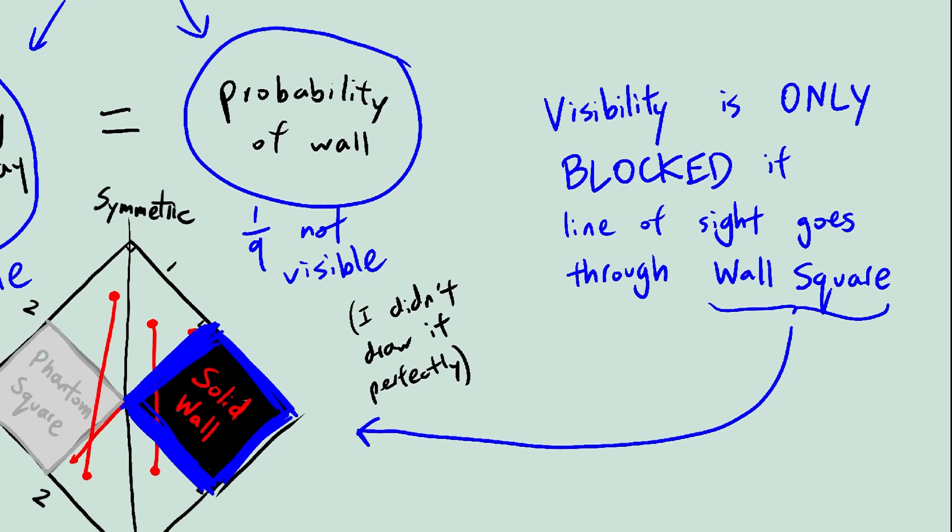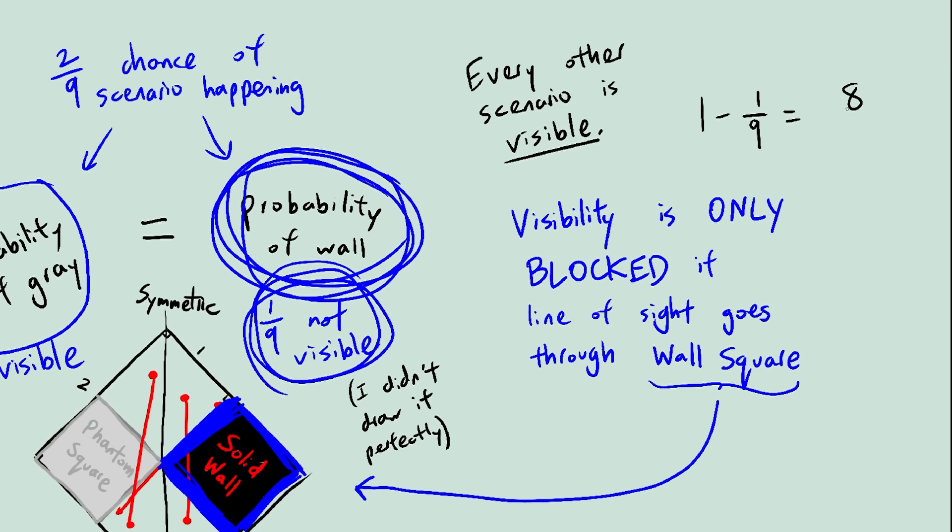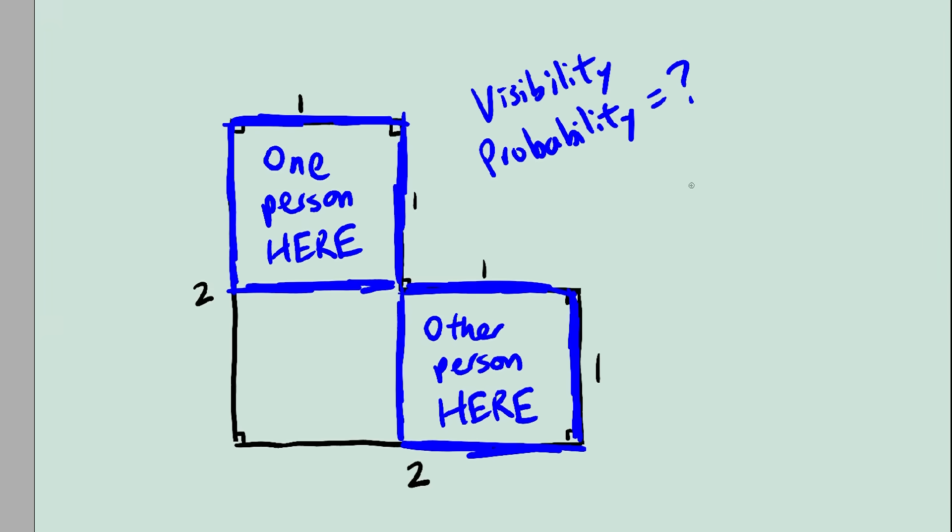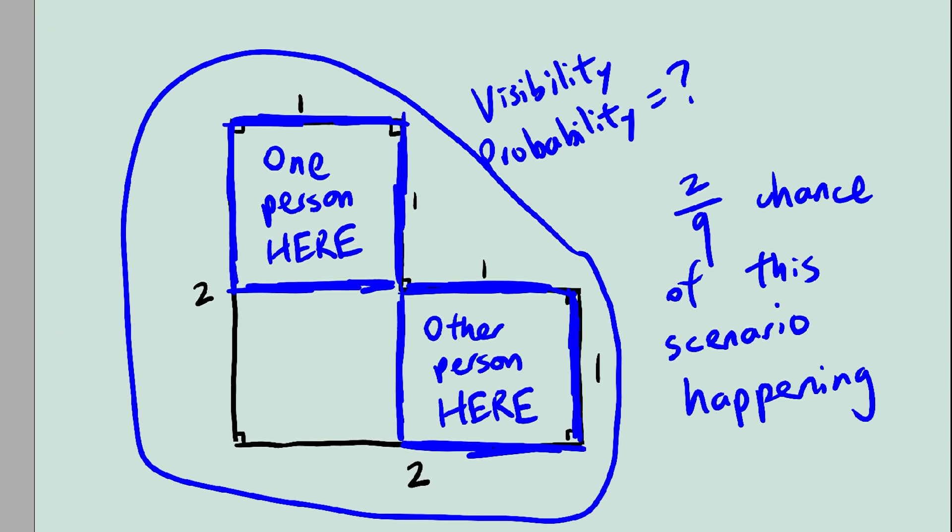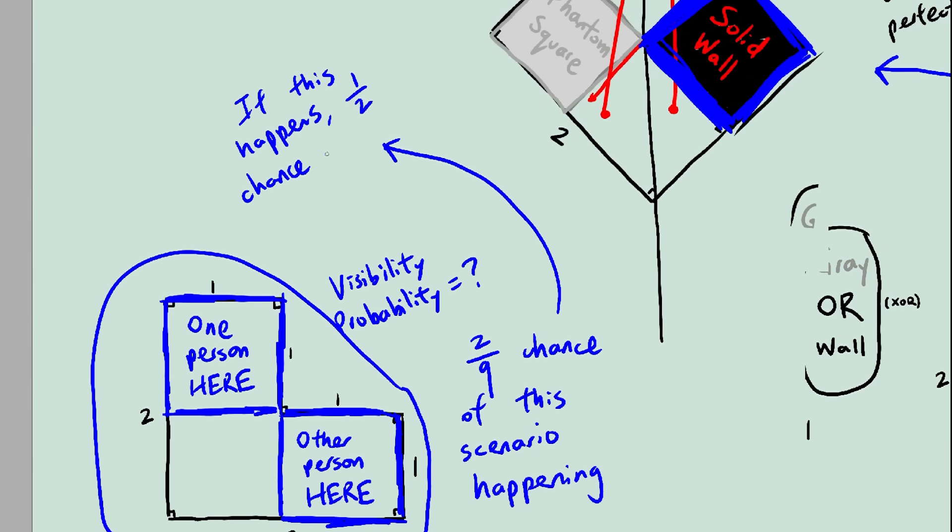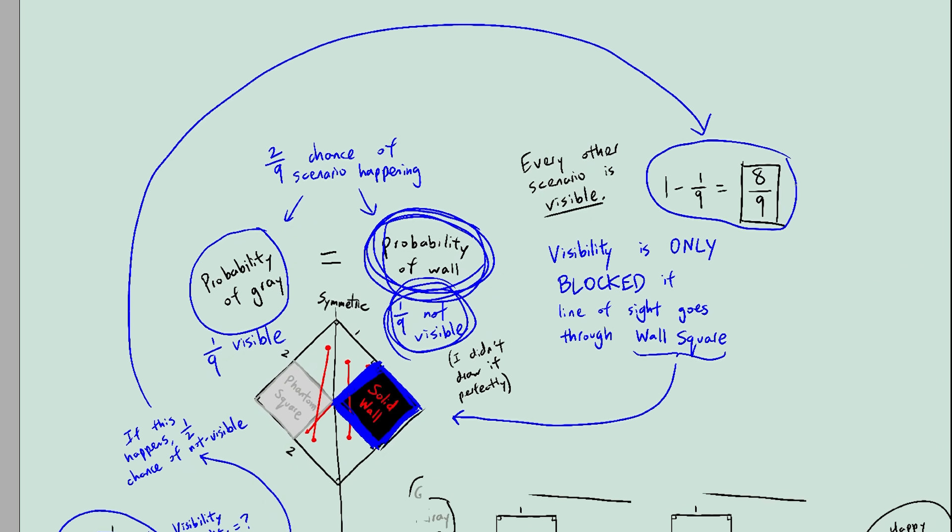So we're done. Since we have a 1 in 9 chance of not being able to see, the answer is just 8 over 9. So yeah, that's solution 1. We first found that this scenario had a 2 over 9 chance of happening. Then we found that when this scenario happened, there was a 50-50 chance of being able to see, not being able to see. So we found that there was a 1 in 9 chance of not being able to see, and we just subtracted it from 1 to get 8 over 9.